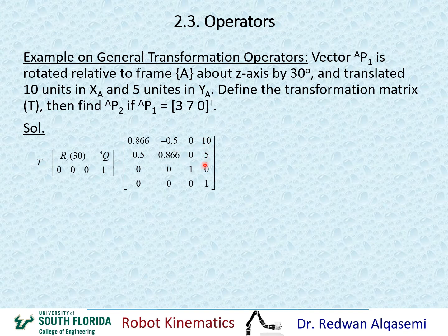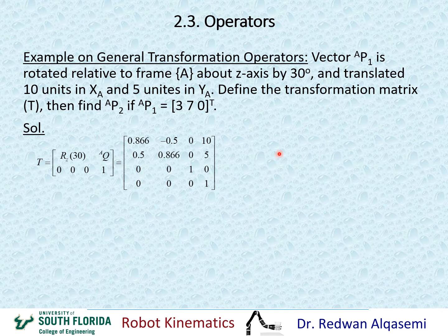For the translation portion, Q relative to A is given as 10 units in XA and 5 units in YA. So that's 10 and 5 in the translation column, and since there is no mention of ZA, we put zero. The last row is the standard zero, zero, zero, one. That completes the four-by-four transformation matrix.